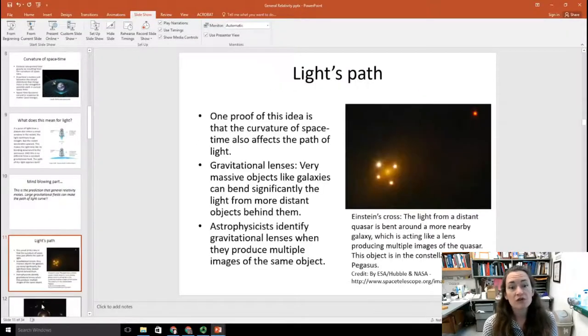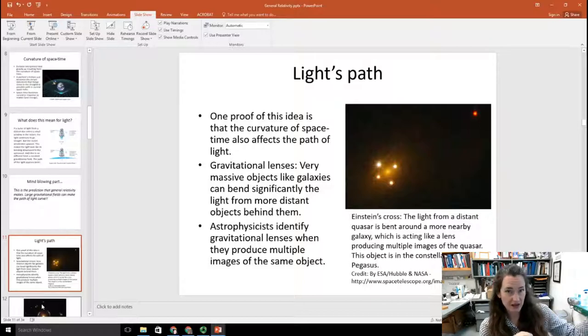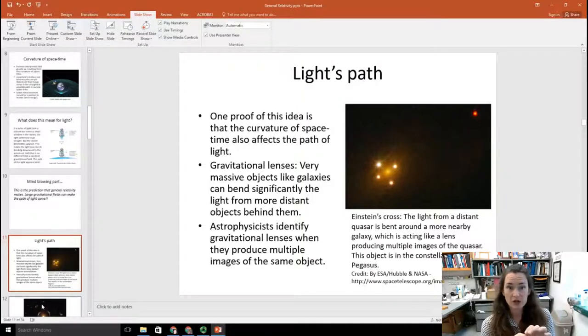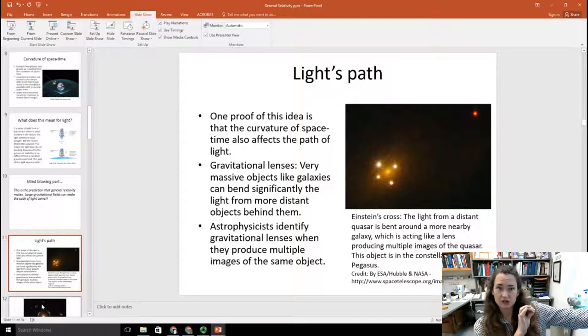Well, one proof of this idea is gravitational lenses. And you can see this and it has been observed. And this is a confirmation of Einstein's theory of general relativity. So what happens in a gravitational lens is that you have very massive objects like galaxies, and they can bend significantly light that passes by them or near them. For example, if you have a more distant object and it passes by a galaxy, then in response to the strongly curved spacetime in the vicinity of the galaxy, the light's path will be bent, will curve.